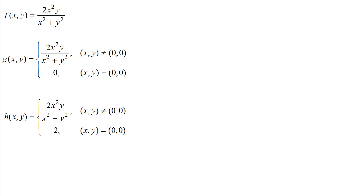I have here three functions and they're all kind of similar to each other but not exactly the same. We're going to compare and contrast the continuity of these three functions. The first thing I would notice about my first function, f, is that this is a rational function — the numerator and denominator are polynomials. Rational functions are continuous on their domain.